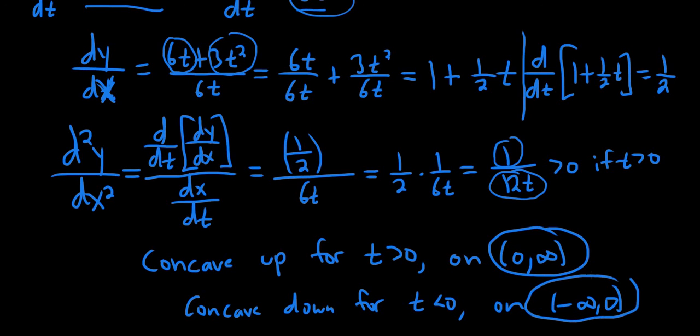So usually it's not too hard once you get here. It depends on the problem. Some of the problems are harder. This one was a lot easier because you can just look at it. Obviously, 1 over 12t will be positive when t is positive and negative when t is negative. So I hope this video has been helpful. That's it.